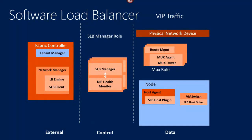What we used to do was use hardware load balancers, which proved very problematic — limitations on routes and ACLs, they fail, they're wildly expensive and you need two for high availability, and they don't scale well. So about five or six years ago, working with MSR, we started a project called the software load balancer. The software load balancer architecture has three sections: the fabric controller on the left, the SLB manager role in the middle, and the SLB mux role on the right, with SLB agents on the nodes.